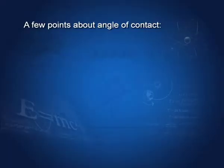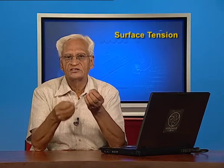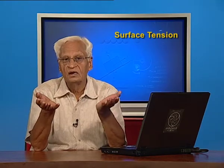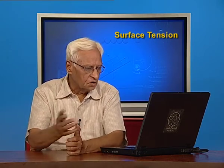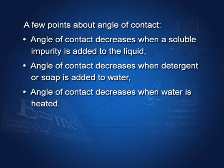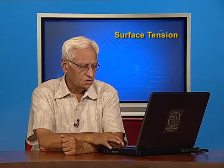The angle of contact decreases when a soluble impurity is added to water — say you add salt or sugar which is soluble in water, then the angle of contact decreases. The angle of contact also decreases when water is heated. The angle of contact involving solids and liquids is an indicator of the wettability of the solid by the liquid.